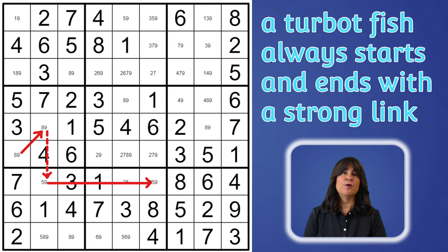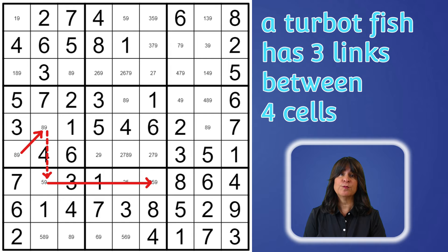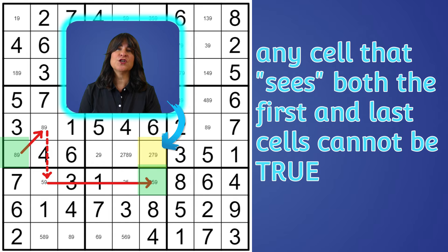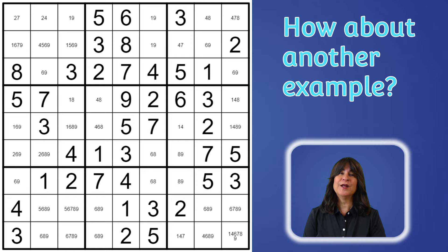To recap: the turbofish has three links — strong, weak, strong — and those links form a chain between four cells. The first cell and last cell cannot both be true. One will be true and the other false, and I'll explain that logic in the next example. Since that's the case, any cell that sees both the first and last cell cannot be true, and so we were able to eliminate the nine in that cell. How about another example, and then I'll explain the logic behind this and why it works.